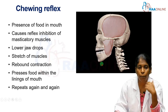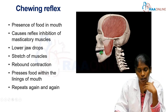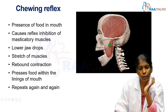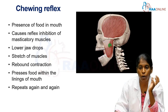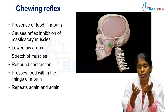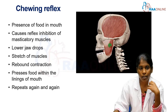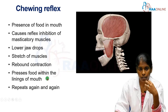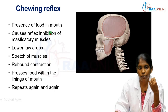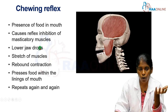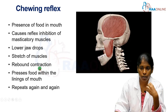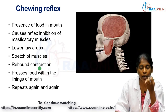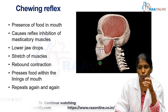When these muscles relax and the jaw drops down, the stretch of the muscles brings about a rebound contraction. This rebound contraction lifts the jaw upwards and presses the food against the linings of the mouth. Again, there will be reflex inhibition of the masticatory muscles, and the cycle repeats — the lower jaw drops down, the muscles stretch, bringing about rebound contraction again. In this way, the lower jaw moves down and up rhythmically, causing the teeth to cut and grind larger food particles into smaller ones. These rhythmic movements constitute the chewing reflex.